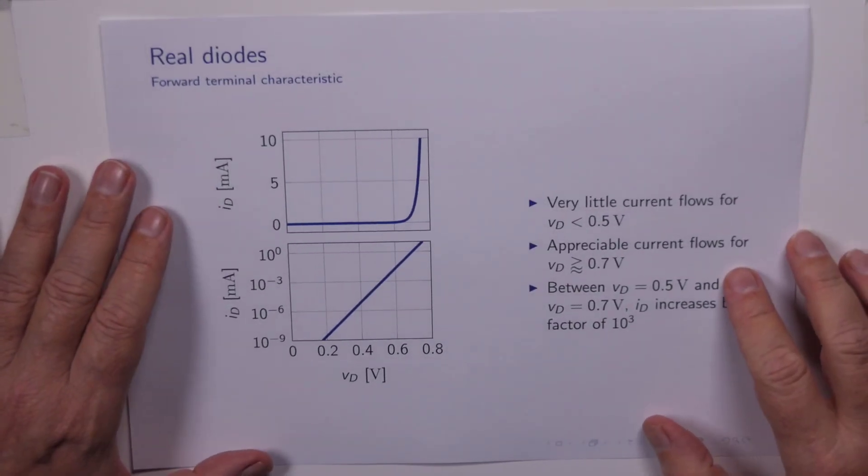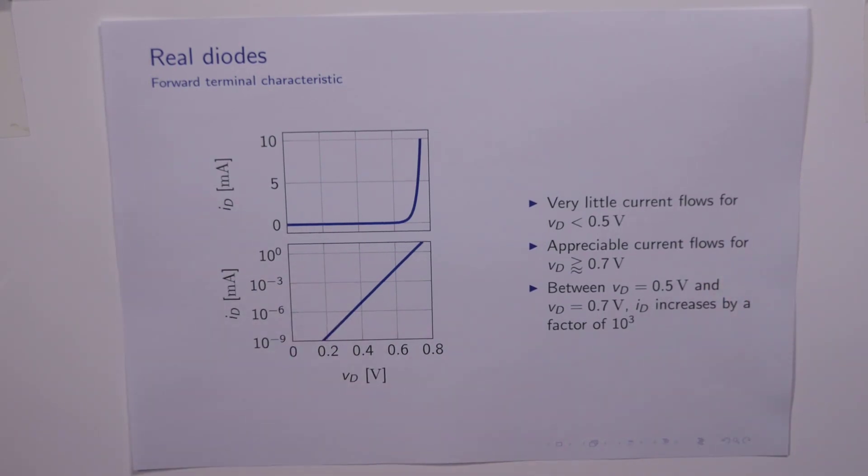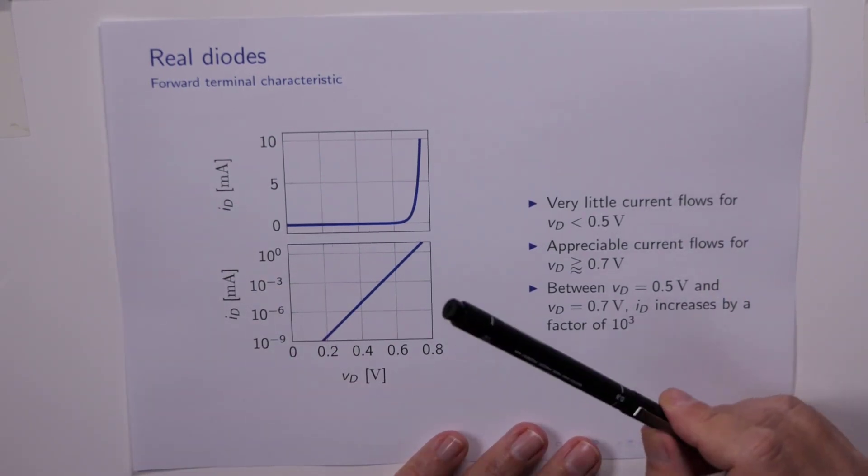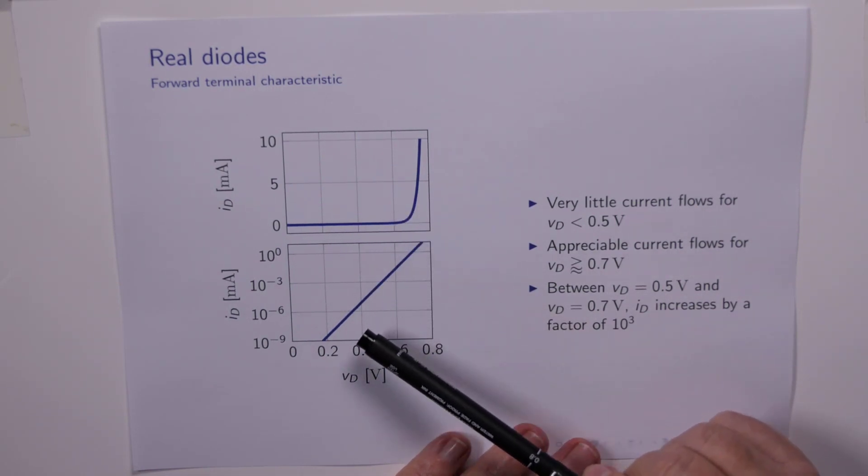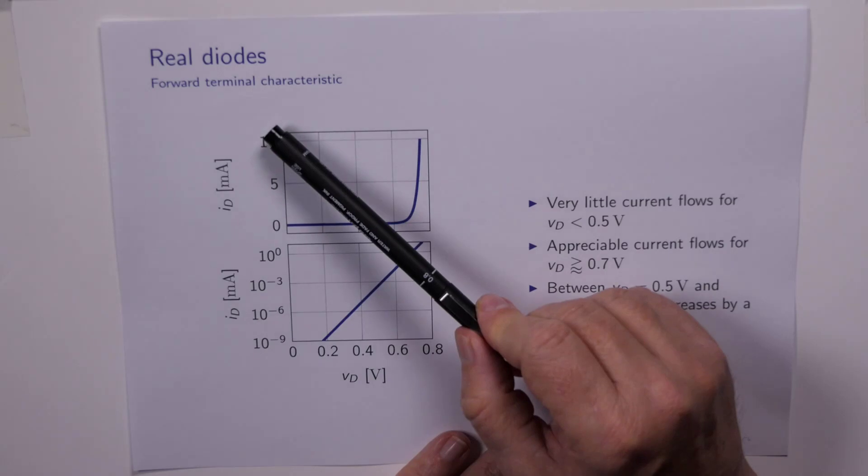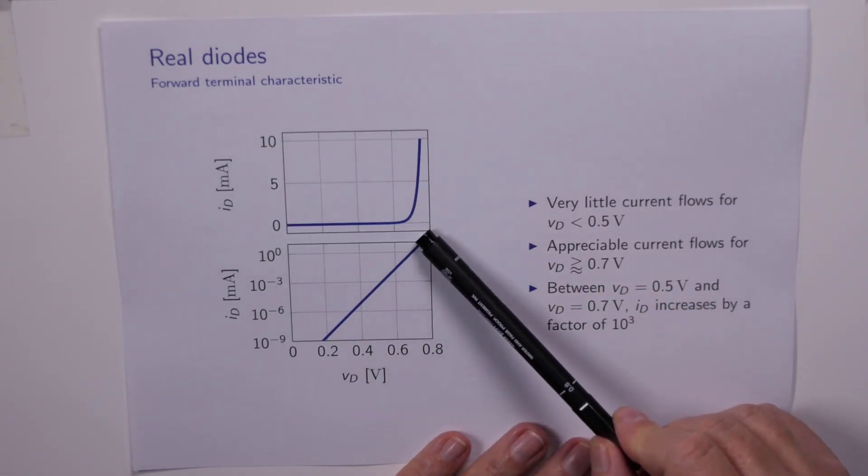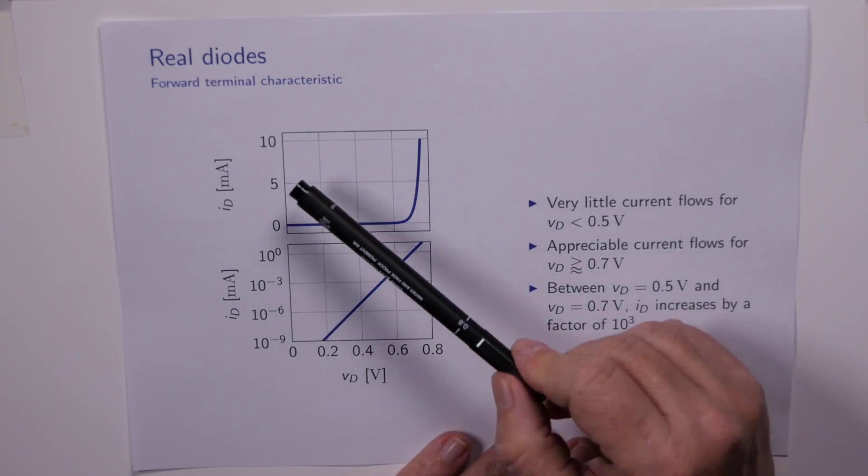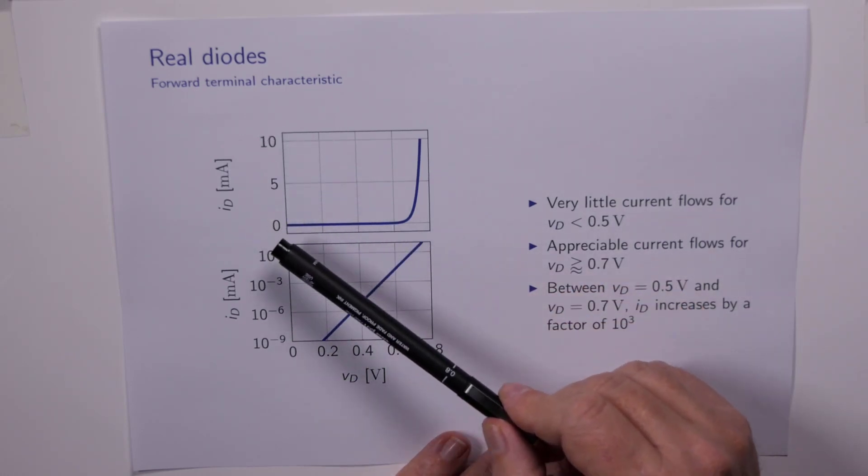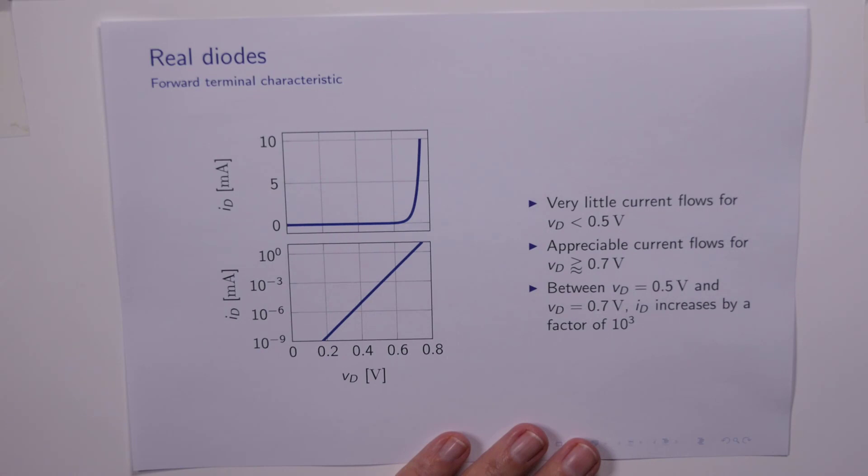Now the graph initially, first time we look at it, it's a bit of a horror story because it doesn't look anything like the ideal characteristic. What I've got here is two graphs, but they are plotting the same data. The top graph is ID versus VD. The bottom graph is also ID versus VD. The top graph has a linear current scale. The bottom graph has a logarithmic current scale.